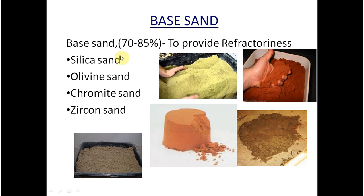Silica sand is the most commonly used sand because of its great abundance. It can be found on beaches, river beds, etc. The fusion point of pure silica is about 1760 degrees Celsius. For high melting point castings such as steel, a minimum of 98 percent pure silica sand should be used. For low melting point metals such as cast iron or non-ferrous metals, a lower purity sand of 94 to 98 percent pure silica can be used.